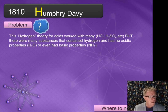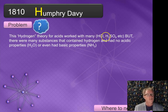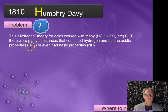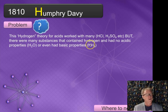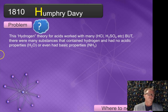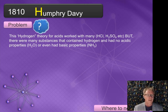However, there's a problem with that one too. This hydrogen theory for acids works well for hydrochloric and sulfuric, but there were many substances that contain hydrogen and had no acidic properties. For example, water has hydrogen but doesn't have acidic properties. And ammonia has hydrogen but it's not an acid — it's a base. So these large generalizations about whether something contains oxygen or hydrogen started to break down, and we needed to be more specific in our definitions.